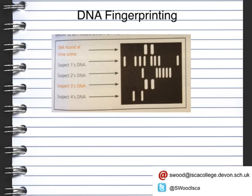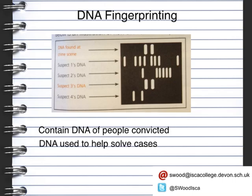DNA fingerprint databases are quite controversial as they contain the DNA of people convicted of crimes. DNA is taken from all people who are convicted of a crime. This means that DNA can be used to go back over old cases using technology that wasn't around when the crime was committed. Because DNA is very accurate and each person has their own separate DNA, the evidence is very strong. However, some people think it's an invasion of privacy to have DNA samples taken from people committing minor offences and from the general public who have not committed any crime at all.